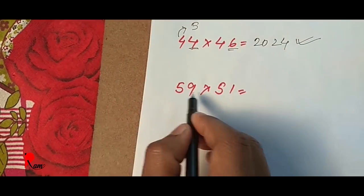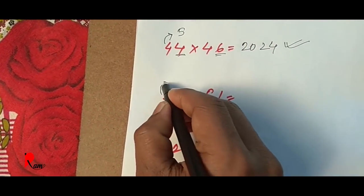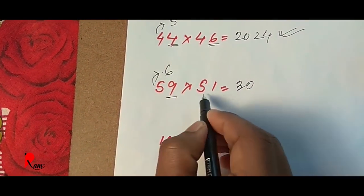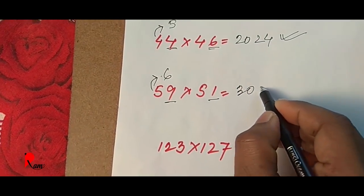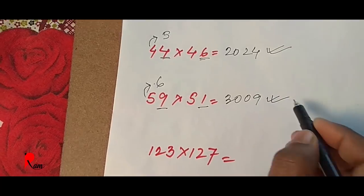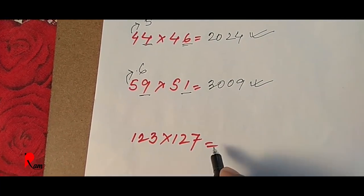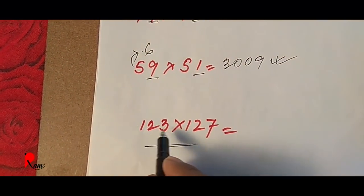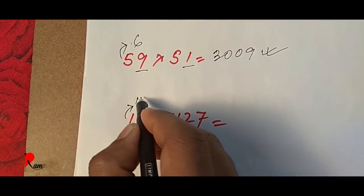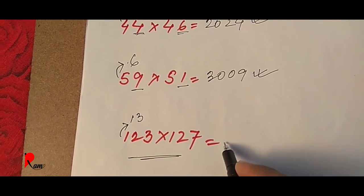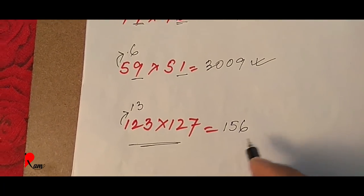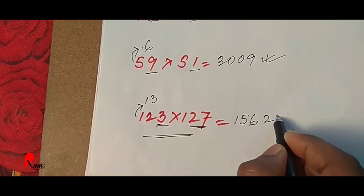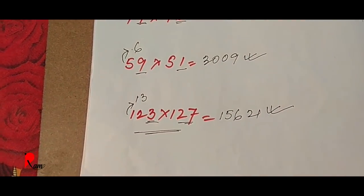59 x 51: 5 x 6 — if you want different — 9 x 1 is 9, then that is 09. So 59 x 51 is 3009. Last time we have our number 13 into 17. So we have 12, so the number is 13. So the number is 156, and 3 x 7 is 21, so the number is 1521.